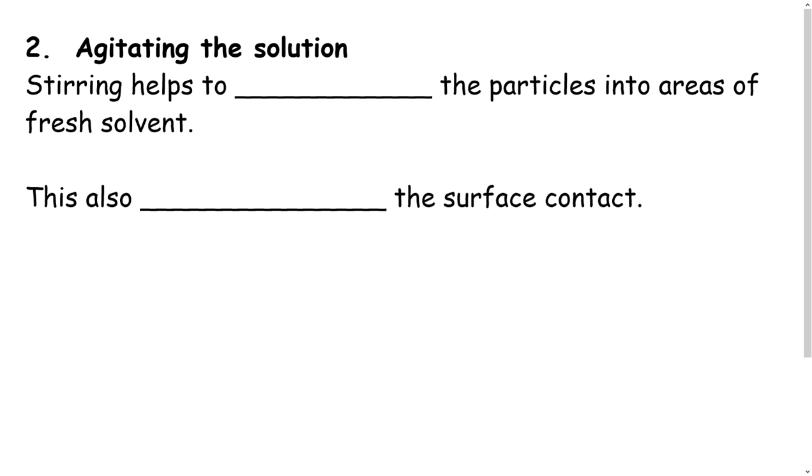The second is agitating the solution, in other words, stirring. And the reason that this helps is because stirring helps to disperse the particles into areas of fresh solvent. So we want our solute and our solvent to interact. And whenever this dispersion occurs, it increases the surface contact. So they interact together.